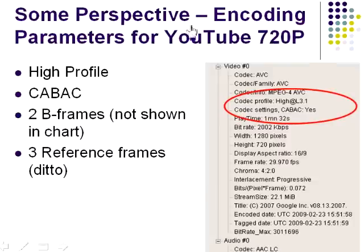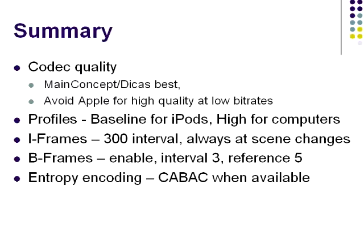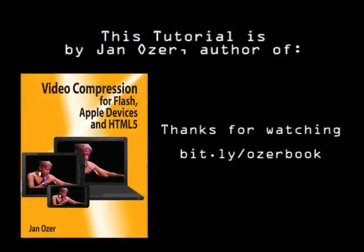What does the market say about all this? Here are the encoding parameters that YouTube uses when producing the site's 720p video. As you can see from this chart from MediaInfo, YouTube uses the high profile and CABAC. YouTube also uses two B-frames and three reference frames — more conservative than I'd like, but in the ballpark of my recommendations. So let's summarize: when choosing an encoding tool, opt for one that uses the MainConcept or DECUS codec, not Apple. Use the baseline profile for iPods and devices, and the high profile for computer playback. Insert key frames every 300 frames and at all scene changes. With B-frames, use an interval of three and five reference frames. Finally, use CABAC whenever it's available.